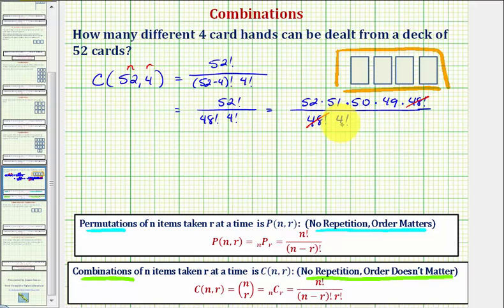And now we'll expand four factorial and simplify again. So we have 52 times 51 times 50 times 49 divided by four factorial, which is four times three times two times one.